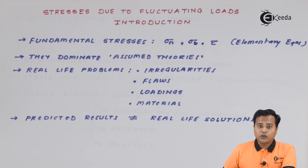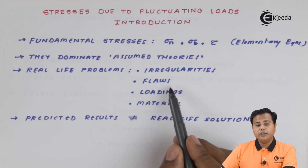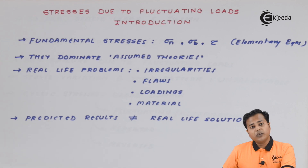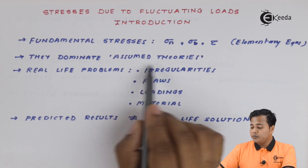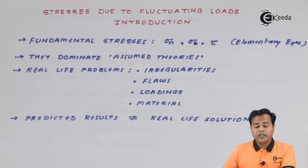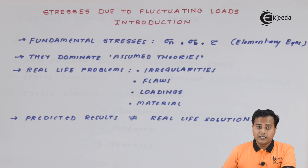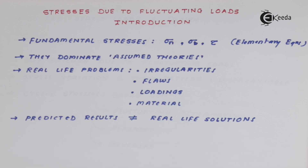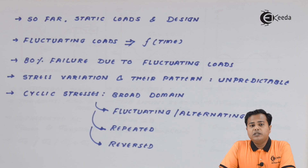In real life, things are not the same. There are irregularities in the cross-section, irregularities in the material composition, irregularities in loadings, and many more. Due to all these irregularities, the assumed theories fail, and since they fail, these equations cannot perform as they are supposed to. The predicted results from assumed theories are not equal to real-life solutions, so we need to consider improvements.